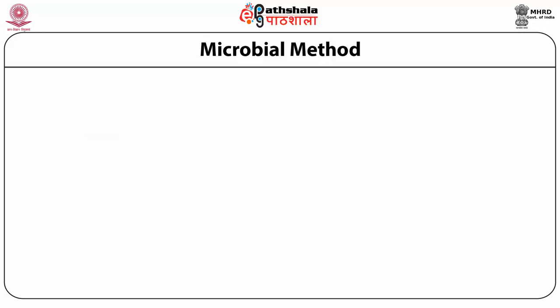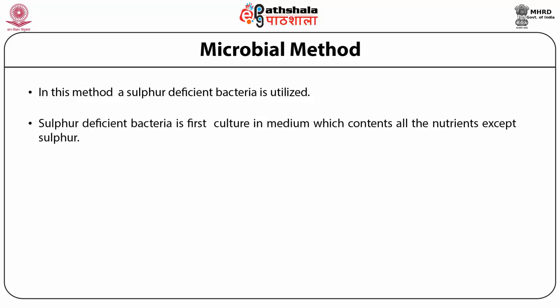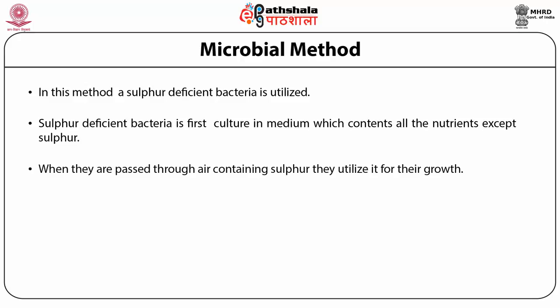The microbial method uses sulfur-deficient bacteria for the control of oxides of sulfur. These bacteria are first cultured in a medium containing all nutrients except sulfur, and when passed through air containing sulfur they utilize it for their growth. An example of such bacteria is IGT 57.